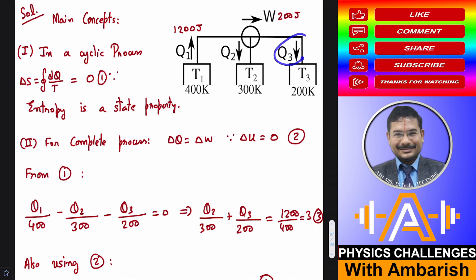So right now I'm not worried whether Q3 is positive or negative. We'll see whatever comes by the equation that we will accept. So according to the given arrows, I'm just saying that Q2 is rejected. Here Q3 is rejected. Here Q1 is accepted.